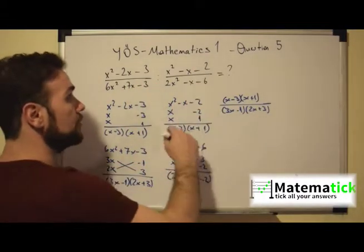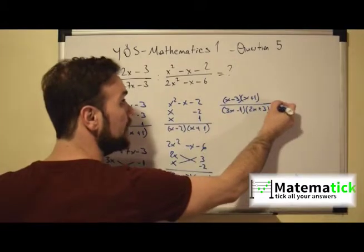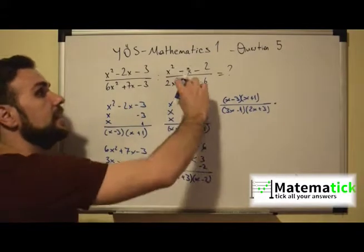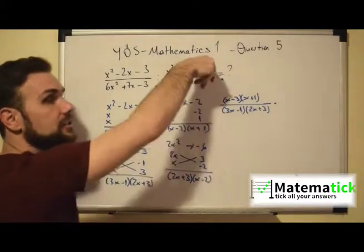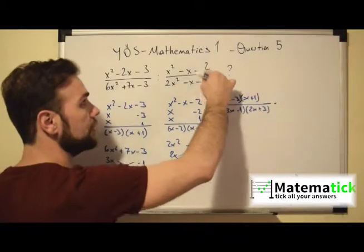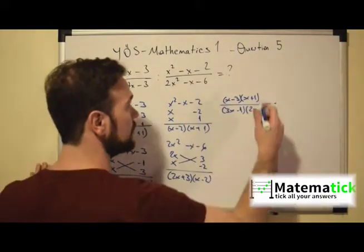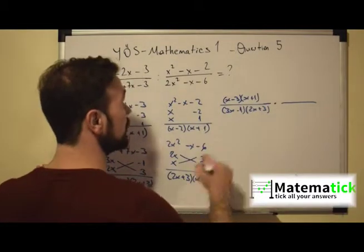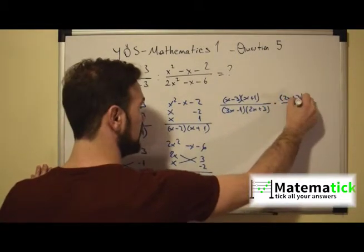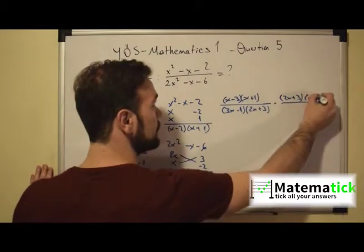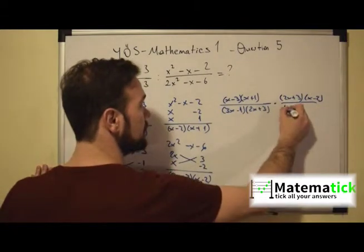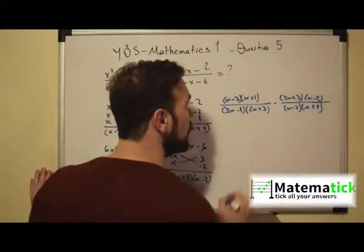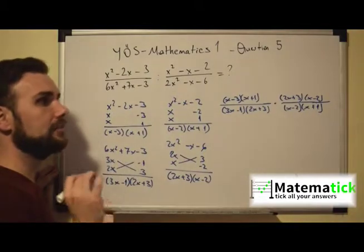We have division here, so when we divide by a fraction, we multiply by its reciprocal — meaning the denominator and numerator swap places. So we multiply by (2x + 3)(x - 2) over (x - 2)(x + 1). Now we only have multiplication, and we can easily simplify.